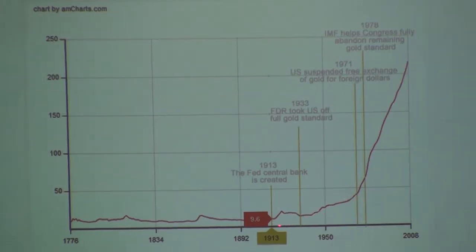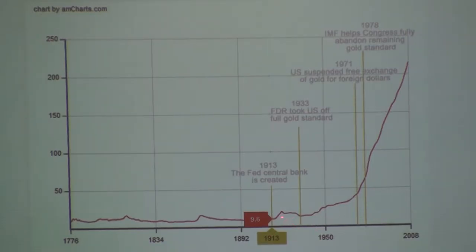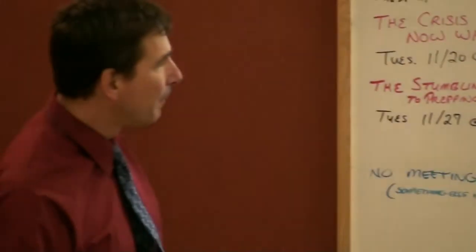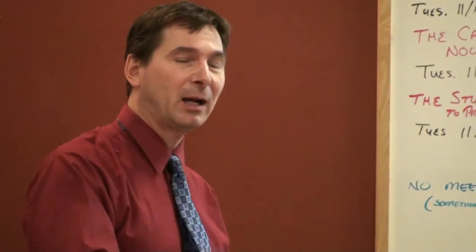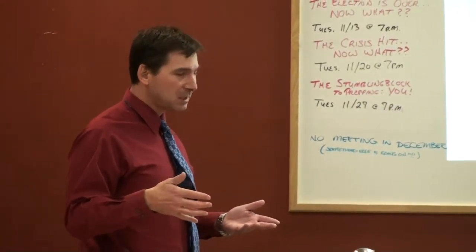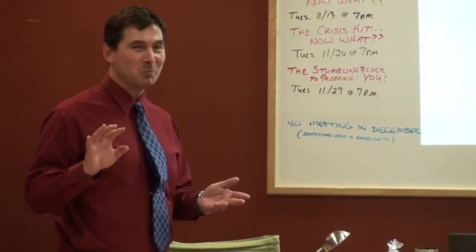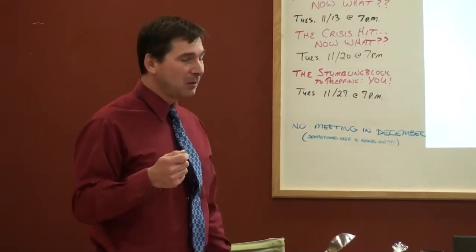It's not too bad looking at that part of the graph, but then all of a sudden it really starts to ramp up. This is actually an old chart — it only goes to 2008 — and it's gone way off the charts since then. So what happened between 1913 and 1971? That was fairly reasonable, and then it goes crazy. A lot of you know what happened in 1971: that was the year Nixon decided the dollar was no longer convertible to gold.